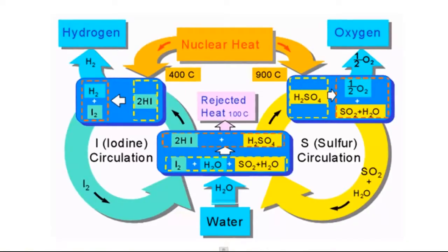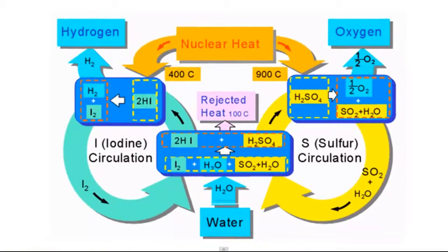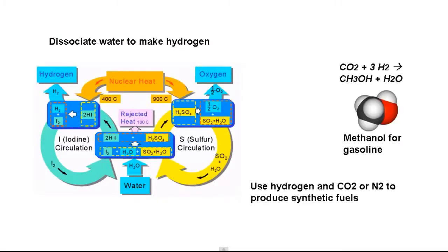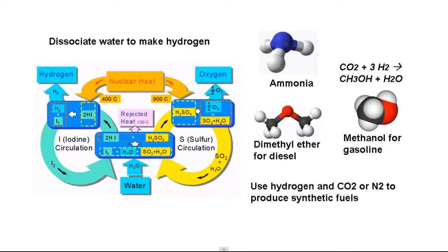We're still going to need liquid fuels for vehicles and machinery, but we could generate these liquid fuels from the carbon dioxide in the atmosphere and from water, much like nature does. We could generate hydrogen by splitting water and combining it with carbon harvested from CO2 in the atmosphere, making fuels like methanol, ammonia, and dimethyl ether, which could be a direct replacement for diesel fuels.